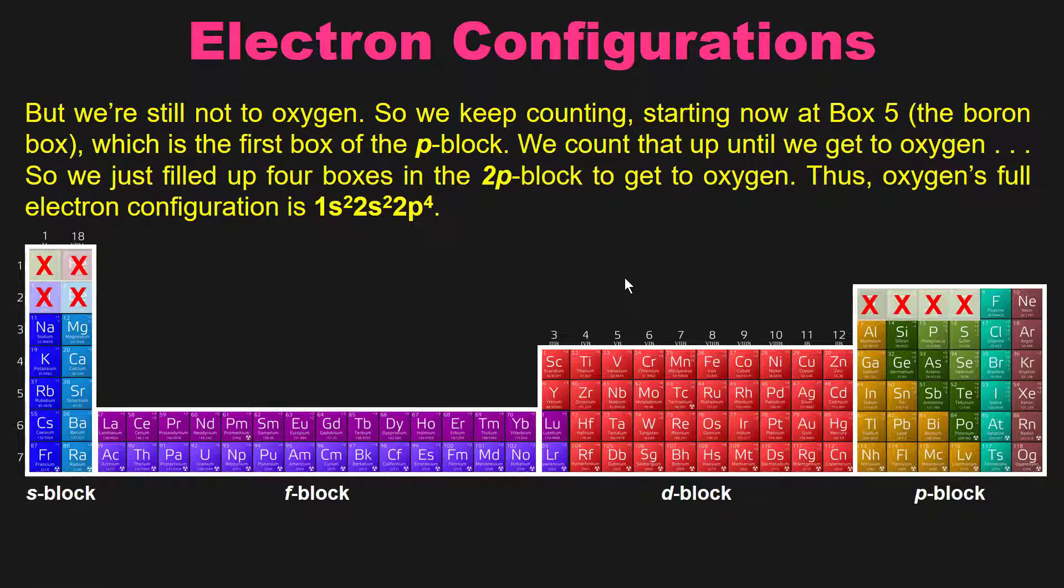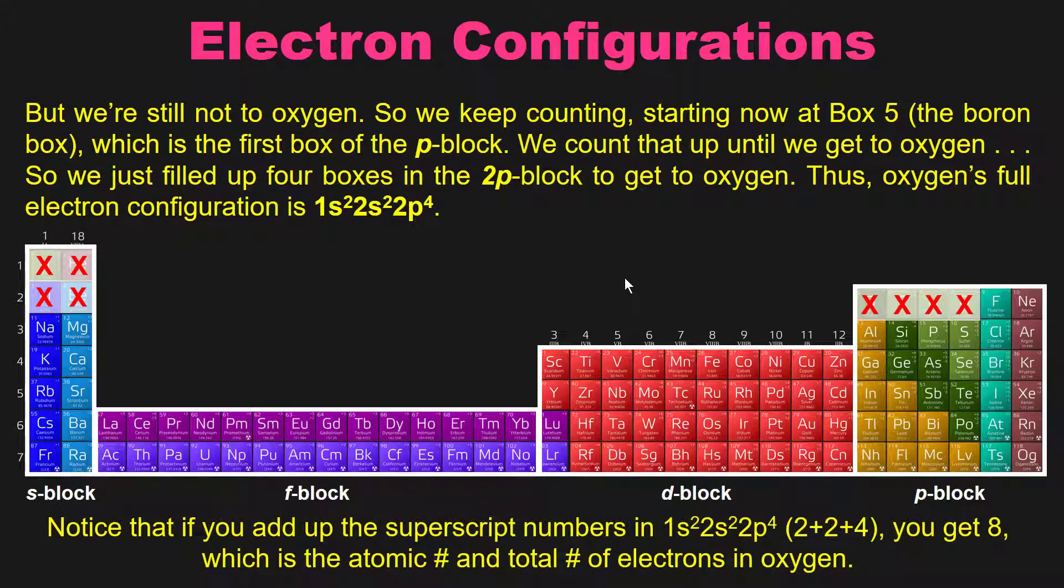Good. Now, you should notice that if you add up the superscripts in the numbers here. So I've got 1s2, 2s2, 2p4. So if I add 2 plus 2 plus 4, I'll get to 8, which happens to be the atomic number and the total number of electrons in an oxygen atom.